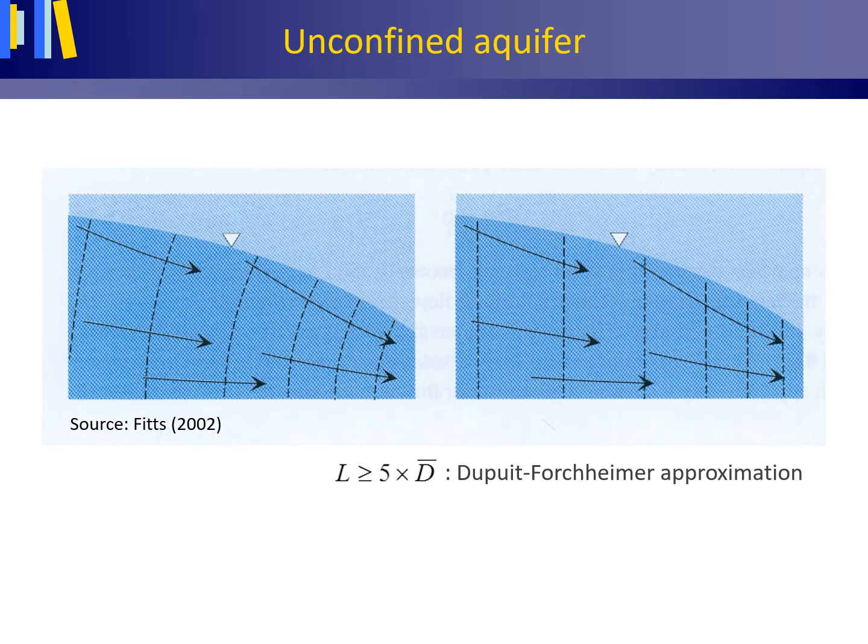For the Dupuit-Forchheimer approximation or assumptions to hold as a rule of thumb, the length L of an isotropic aquifer must at least be five times larger than the average hydraulic head or average saturated aquifer thickness indicated as D̄.